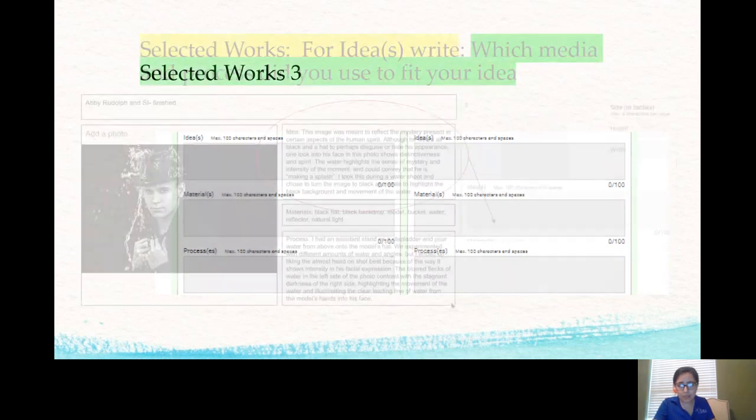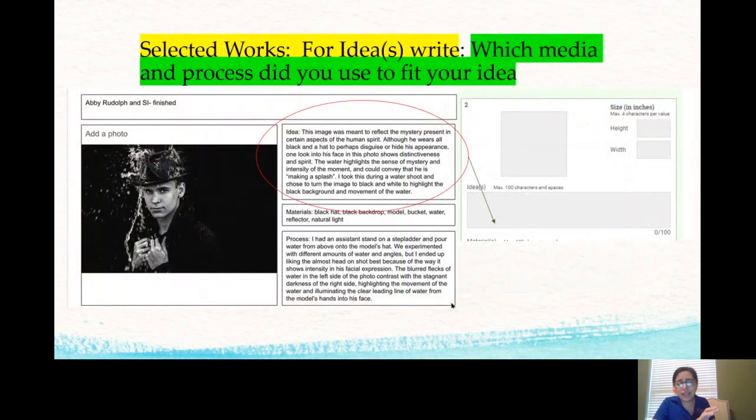So again, max of a hundred characters and spaces. This is an example of a student that has typed his information on a different doc so that he's ready to copy and paste it into the idea section. So this student did photography and his ideas. What he's talking about is this image was meant to reflect the mysterious present in certain aspects of human spirit. Although he wears all black and a hat that perhaps disguises or hides his appearance, one look into his face in this photo shows distinctiveness. So that is a lot that he wrote about, but now he's going to go back and just use certain parts from that for the idea. So again, he talks about the water highlights, the sense of mystery, the intensity of the moment. So he continues describing it from that. He's going to take those ideas that he wrote and minimalize them into a hundred characters.